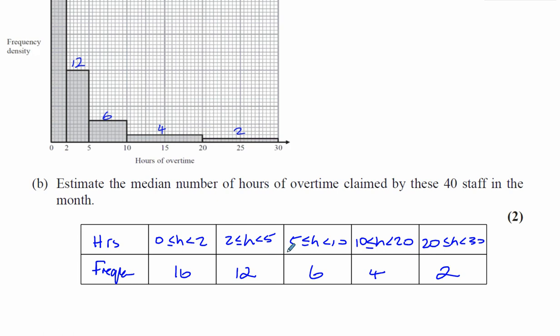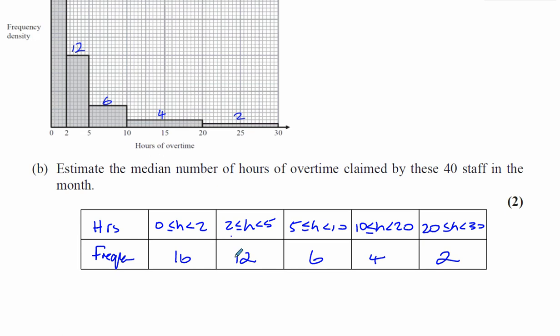These are the results that we got in part A, where we had to work out the number of people who worked ten hours or less than ten hours of overtime — so you had to add these together. Now, it says estimate the median number of hours of overtime claimed by these 40 staff in the month. So we're going to estimate the median number.